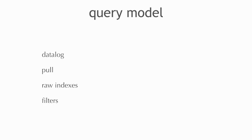We're going to look at four different ideas around getting data out: Datalog query, which is logic; pull, which is hierarchical; raw indexes, which is getting access to the underlying streams over data; and then filters, which is thinking about time.